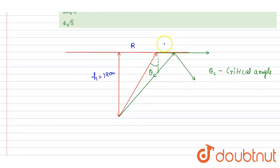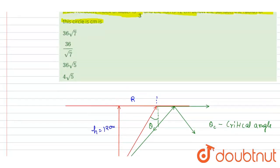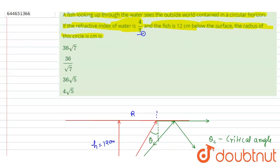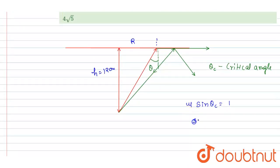So theta c you can see is the angle at which the angle of refraction is 90 degree. So I will write mu sin theta c is equals to mu of air is 1, and sin 90 is again 1, so it will be 1. From here you can write down sine theta c. The mu is 4 by 3, so it will be 1 by mu. Sin theta c is 1 by mu, and it will be 3 by 4.